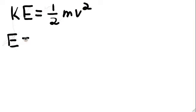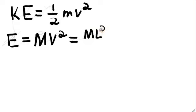On the right-hand side, we have units of mass times units of velocity squared. So we know that units of energy is the same as units of mass times units of velocity squared. Since velocity is the same as length over time, we know that this must also be equal to mass times length squared divided by time squared.